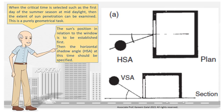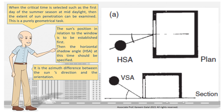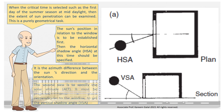The sun's position in relation to the window is to be established first. Then the horizontal shadow angle, HSA, at this time should be specified. It is the azimuth difference between the sun's direction and the orientation. The second step is to specify the solar altitude, ALT. It must be projected onto a plane perpendicular to the window to get the vertical shadow angle, VSA.